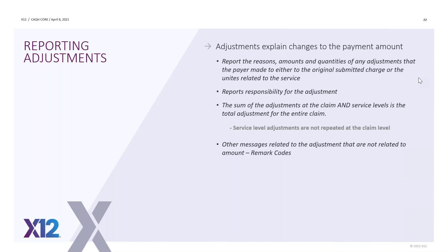Adjustments will explain the change to the payment amount. You report the reason, the amount, and the quantity of any adjustments the payer made to either the original charge or units related to that service. You basically start with the submitted charges — say $100 — and you break it down. First you might look for patient responsibility based on the member's plan, then a contractual adjustment — contractually not going to pay X because it wasn't the right physician, or they didn't have a pre-auth, or whatever the reasons are.